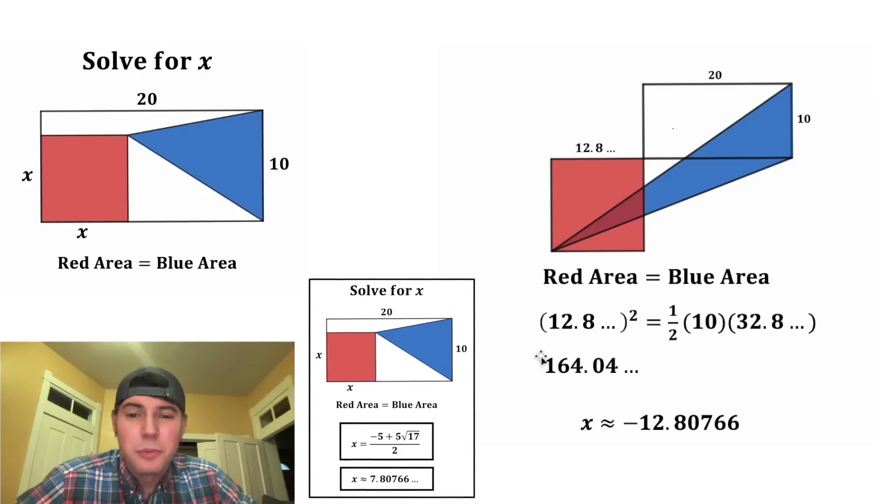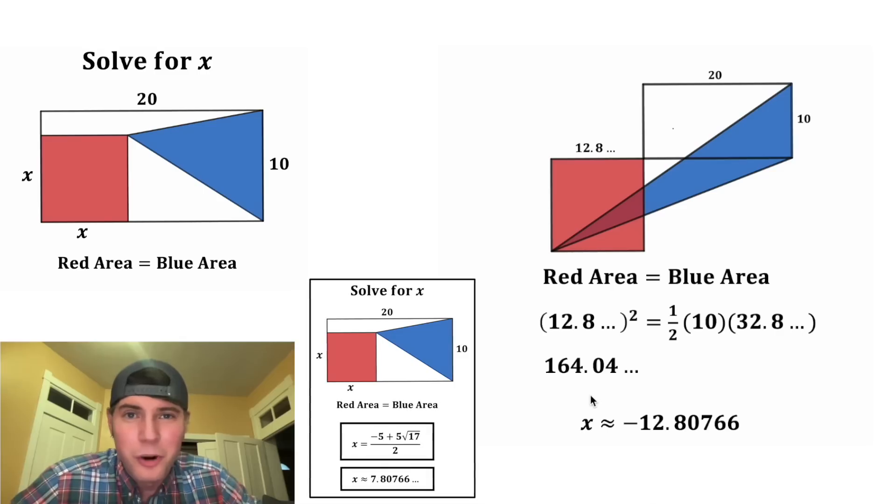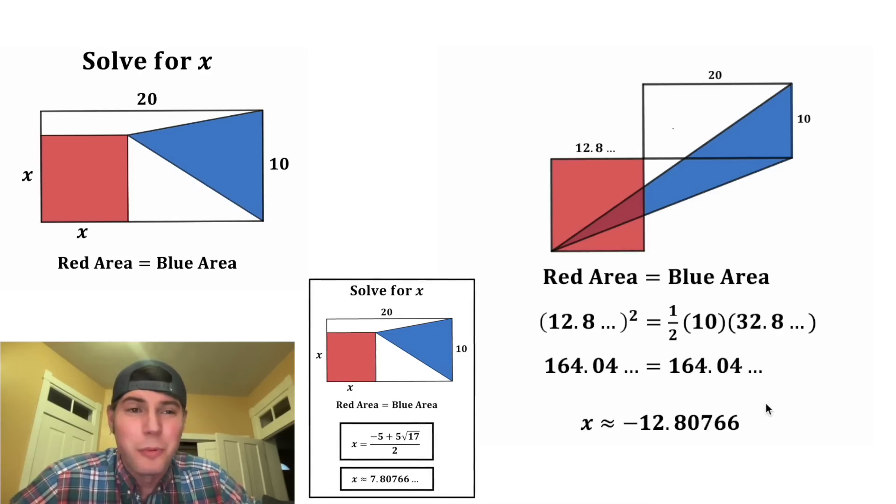And this 12.8 number squared is equal to approximately 164.04. And this one half times 10 times this 32.8 number is equal to approximately 164.04.